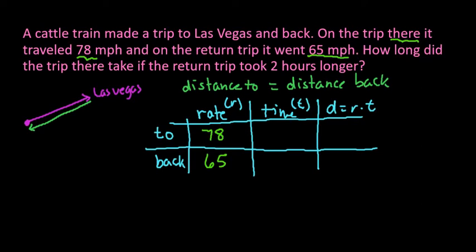And then for the next part, it tells us we're looking for how long did the trip there take. So our unknown, the one that we're looking for, is our trip to Las Vegas. The return trip took two hours longer, which makes sense that it would be longer because we're traveling at a slower speed.